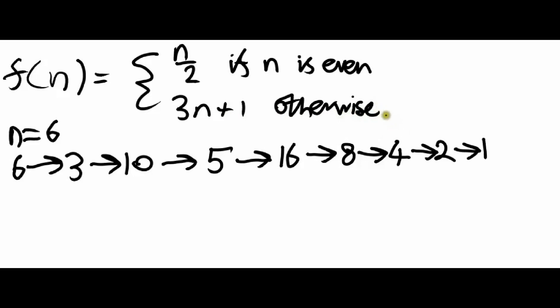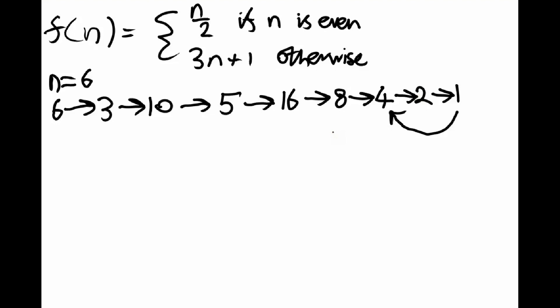And then what happens? Well, 1 is odd, so we times it by 3 and add 1, so we get back to 4. And then when we update 4, we go to 2, to 1, to 4, to 2, to 1, to 4, to 2, to 1, for the rest of eternity. So in this case, we started with the number 6, it grew a little bit, it shrunk a little bit, and eventually we ended up getting trapped in this cycle where the number just kept changing cyclically. The collapse conjecture says that if you start with any integer at all and keep updating it like this, eventually the number 1 is going to appear. That's the big problem which has defeated the world's greatest minds for decades.